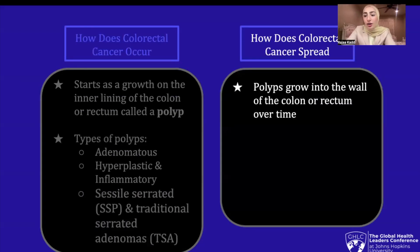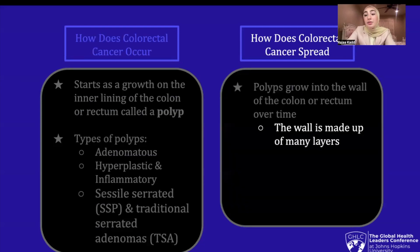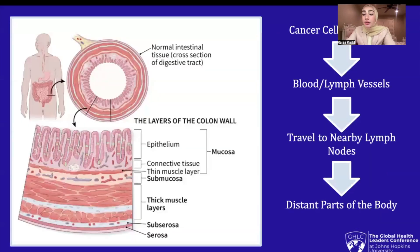So how does colorectal cancer spread? Polyps grow into the wall of the colon or rectum over time. The wall is made up of many layers. Colorectal cancer starts in the innermost layer, or the mucosa, and can grow outward through some or all the other layers, as in the picture below. When cancer cells are in the wall, they can then grow into blood vessels or lymph vessels, and from there they can travel to nearby lymph nodes or to distant parts of the body.